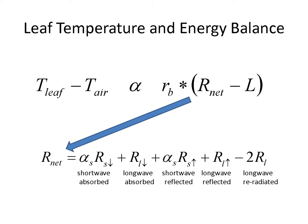All other things being equal, if net radiation increases — if the amount of radiation absorbed by the leaf increases — that number will increase, so the leaf will get warmer relative to air temperature. Similarly, if the boundary layer resistance increases, all other things being equal, leaf temperature will get warmer relative to air temperature because boundary layer resistance is the controller of convective heat loss. So we have the main energy input to the leaf and then the main methods of energy dissipation: boundary layer resistance, which controls convective heat loss, and latent heat loss.